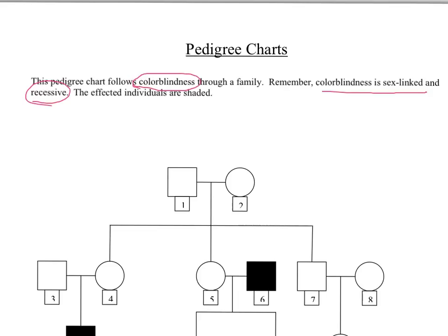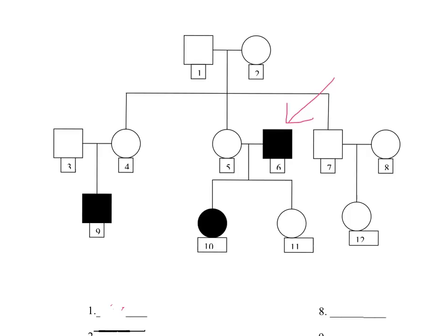So what that means for us is that every shaded in area is representing a person that is colorblind. So when we look right here, we see that number six is colorblind. We also see that number ten and number nine are also colorblind.